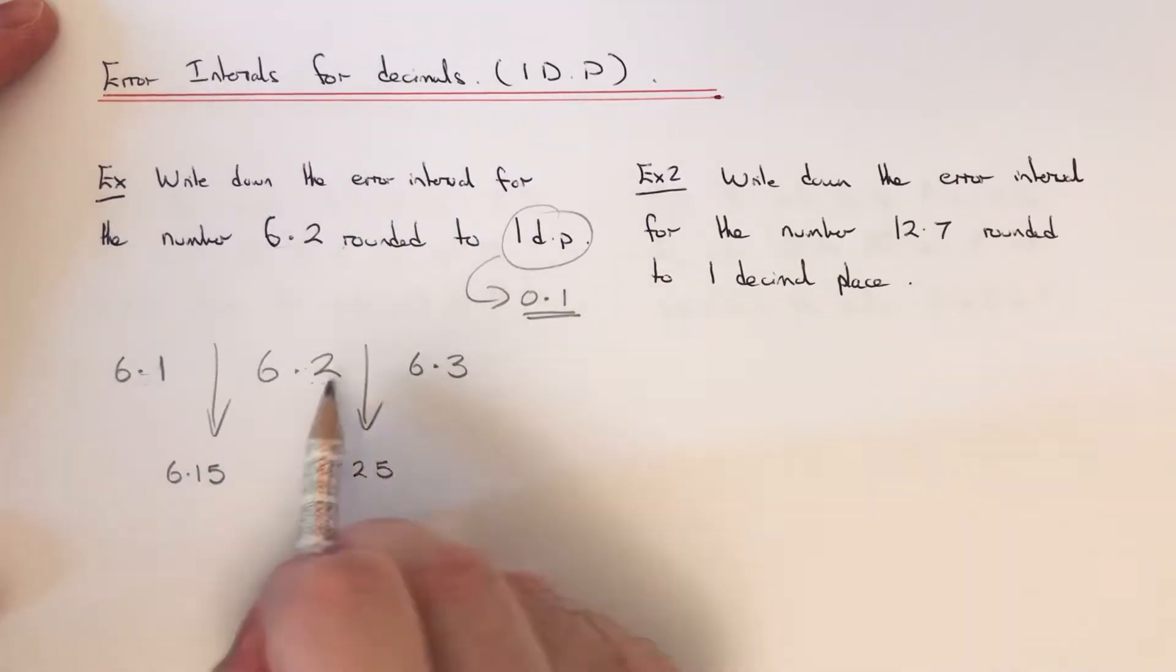So this is the lowest number that the number could be which is the lower bound, and this is the highest number that the number could be which is called the upper bound. So we use these to write down our error interval.